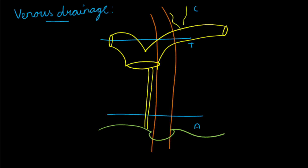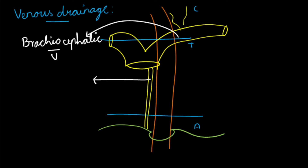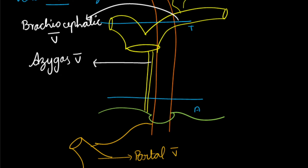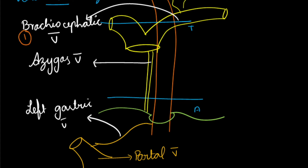Regarding venous drainage: the cervical part is drained by the brachiocephalic veins, the thoracic part is drained by the azygos vein, and the abdominal part is drained by the left gastric vein, which drains completely into the portal vein. The three veins to remember are: brachiocephalic for the cervical part, azygos for the thoracic part, and left gastric for the abdominal part.